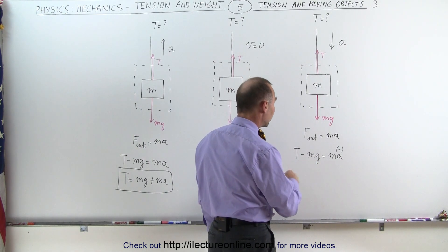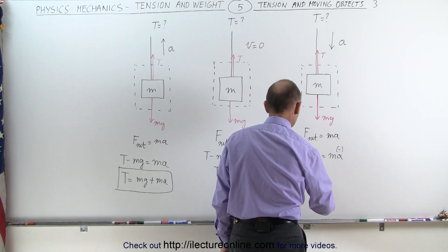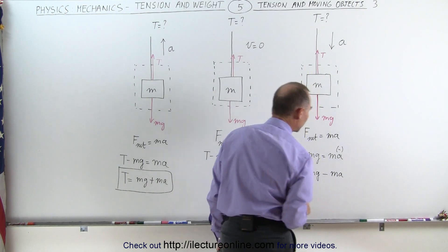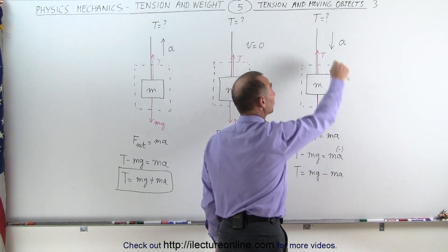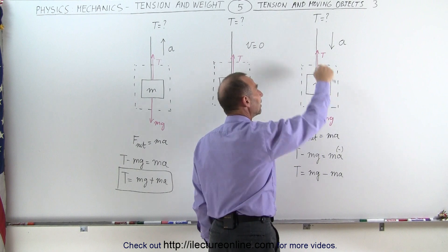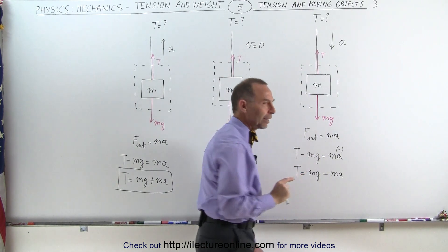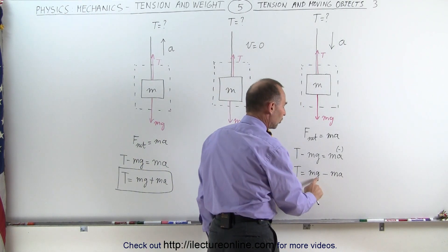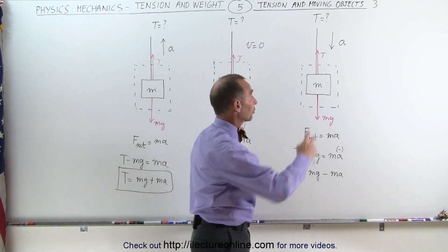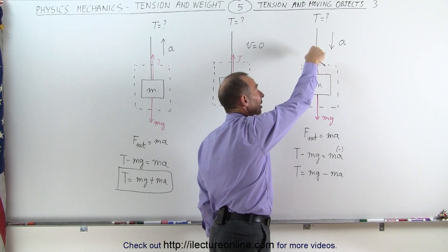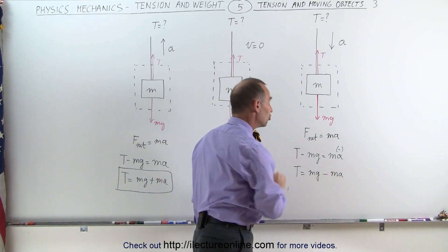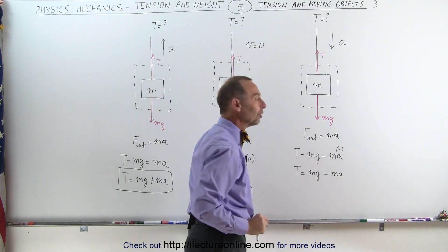Since the acceleration is negative, the weight must be greater than the tension. The tension equals the weight of the object minus the mass times acceleration — we subtract because the acceleration is negative. In the limit where the negative acceleration equals the acceleration due to gravity, mg minus mg equals zero and the tension equals zero. This makes sense: cutting the string means the object accelerates downward at minus 9.8 m/s², and the tension goes to zero.